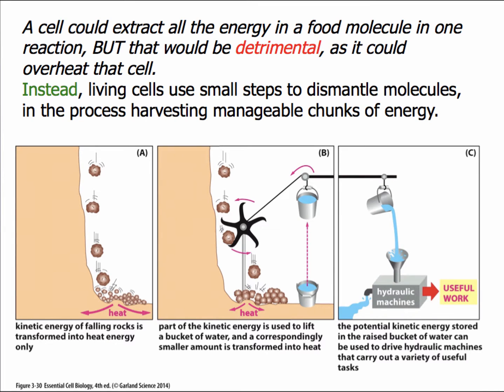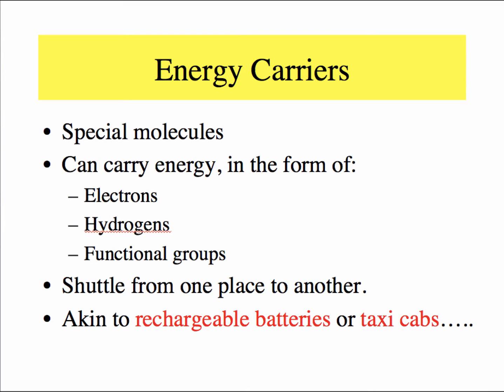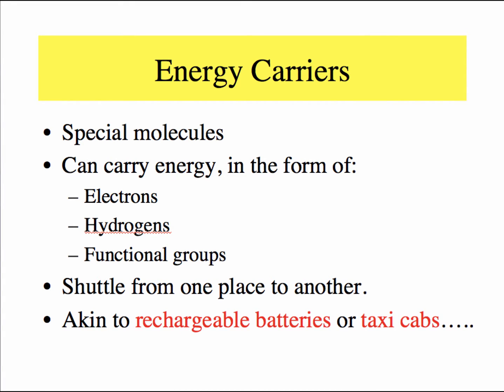The bucket represented in this figure is really a form of energy carrier. Energy carriers are special molecules adapted by nature to transfer energy from one location to another, from one chemical reaction to another, or across cells for various purposes. There are four very important energy carrier molecules that we need to learn about in this section. These molecules are adapted for carrying energy in the form of electrons or protons of hydrogen or functional groups like phosphates and methyl groups. I will refer to rechargeable batteries and taxi cabs as analogous structures that can be easily related to in terms of energy transfer.